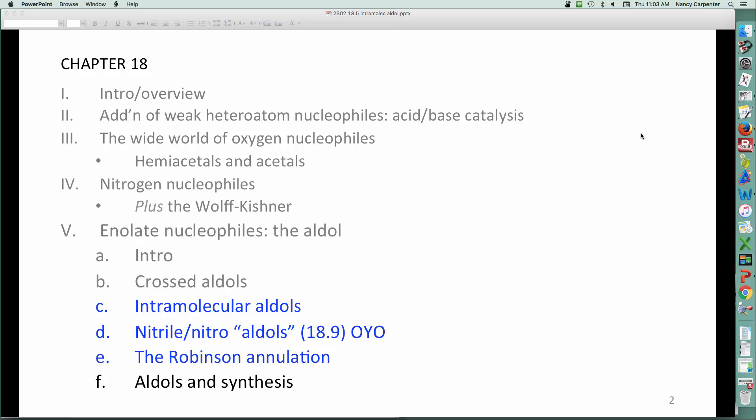Where are we? We're almost done. What we're covering in this mini lecture, more or less, are two things. The intramolecular aldols and the Robinson annulation. Section 18.9 is about not aldehyde or ketone aldols, but aldol type reactions with nitriles and nitro groups. And that is on your own. Pretty straightforward as long as you get aldols understood.